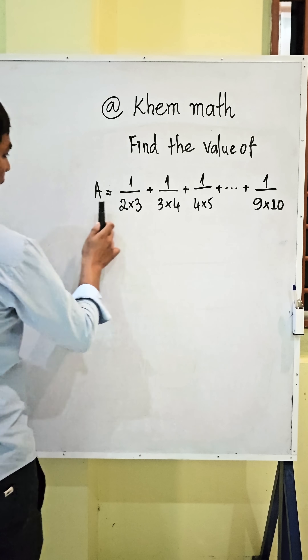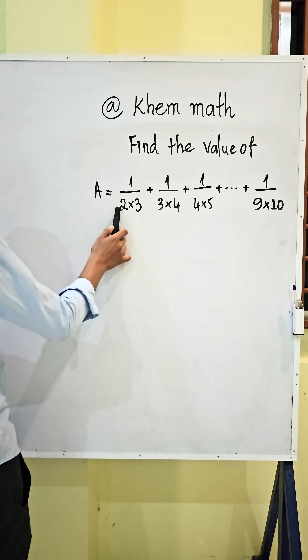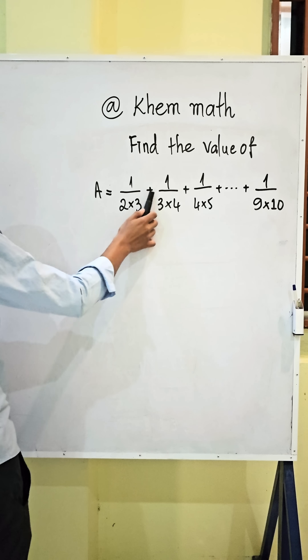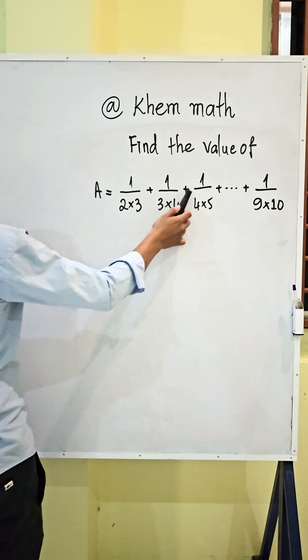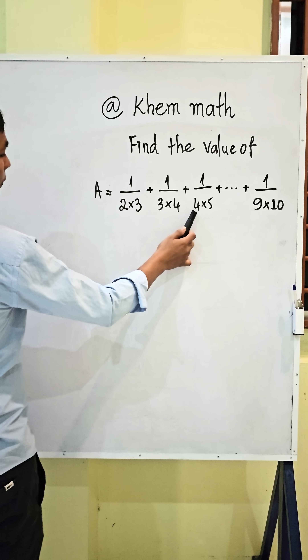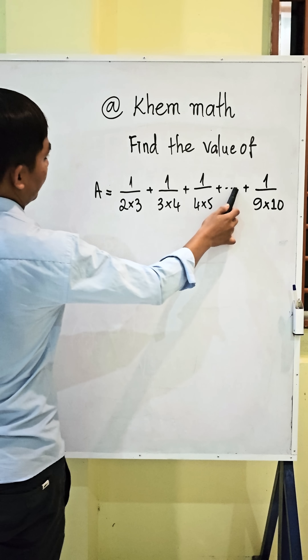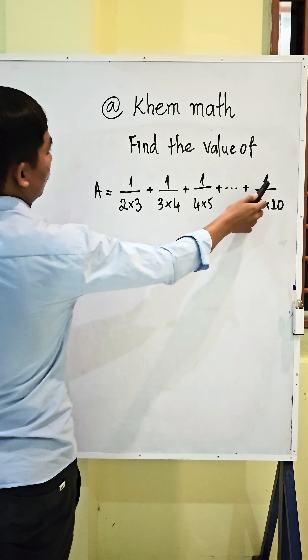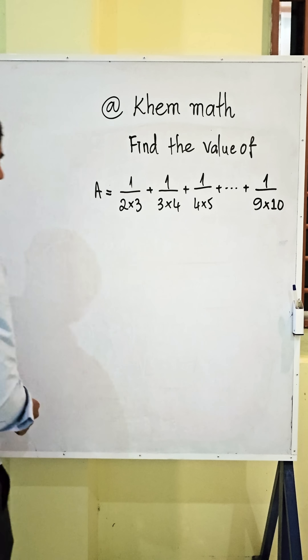Find the value of A equal 1 divided by 2 times 3, plus 1 divided by 3 times 4, plus 1 divided by 4 times 5, plus 0.1, plus 1 divided by 9 times 10.